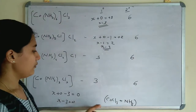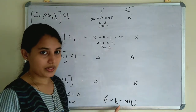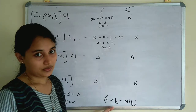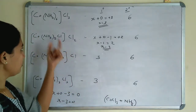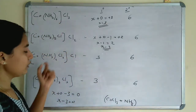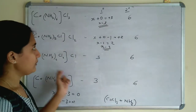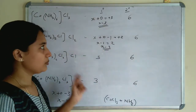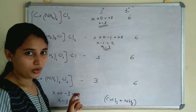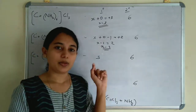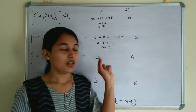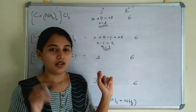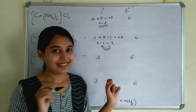Werner conducted this reaction — he added excess ammonia to CoCl₃ and got these four compounds. Their primary valency and secondary valency were determined. From that we can write the structure of the compound. Primary valency is denoted by a dotted line and secondary valency is represented by a thick line.